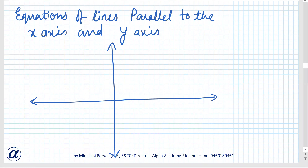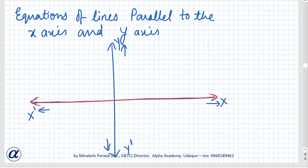The next topic is equations of lines parallel to the x-axis and y-axis. This is the x-axis, x, x-dash, y, and y-dash — representing positive x, negative x, positive y, and negative y. The equation of the x-axis is given by y equals 0, and the equation of the y-axis is given by x equals 0.